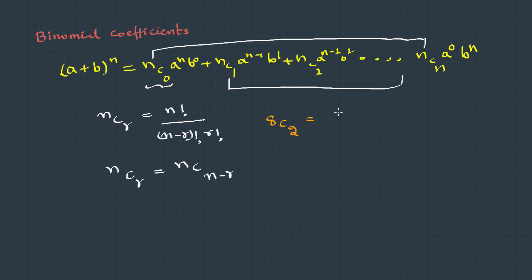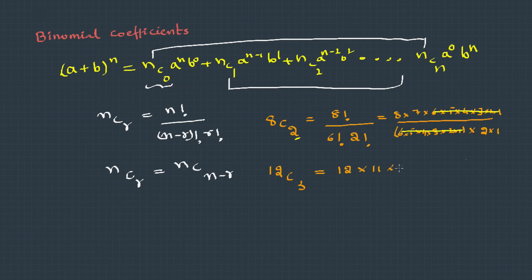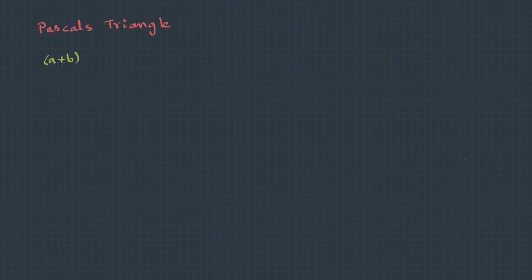Let's take an example: 8C2 = 8! / (6! * 2!). When we expand this, the 6! in the denominator cancels with the numerator. So whenever we expand, we need not write every term — we only write terms equal to r. Since r is 2, expand only 2 terms. For 12C3, since r is 3, expand 12 only till 3 terms: 12 into 11 into 10, divided by 3! = 3 into 2 into 1.